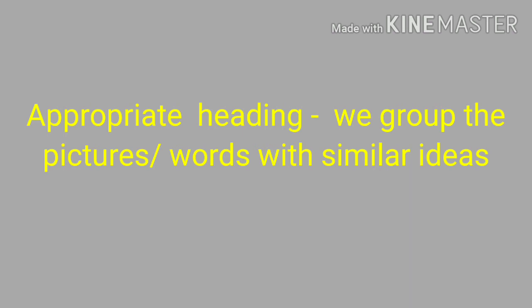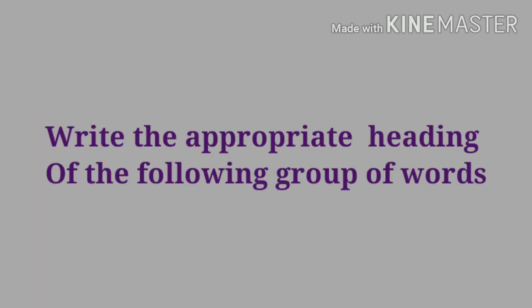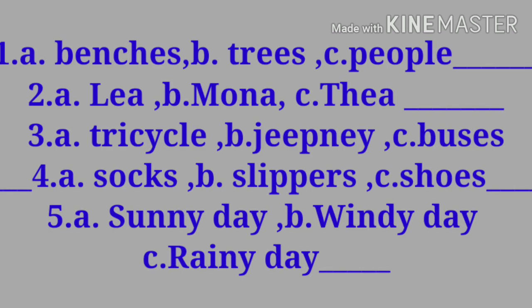Now I want you to write the appropriate heading for the following. Number one: A. Tricycle, B. Gypsy, C. Buses. Number four: A. Sacks, B. Sleepers, C. Shoes. Number five: A. Sunny Day, B. Windy Day, C. Rainy Day.